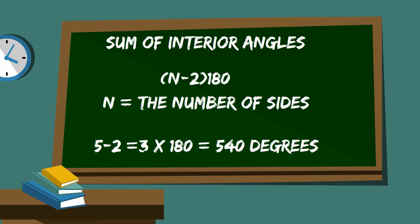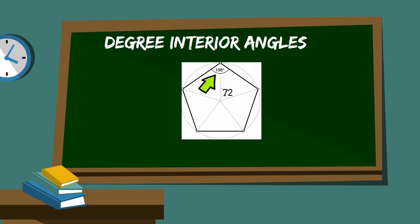If you do the math you come up with 540 degrees. The degree measure of the interior angles equals the sum of all the interior angles divided by the number of sides. So you take 540 divided by 5 equals 108.